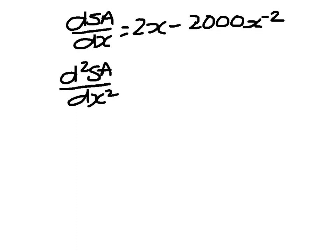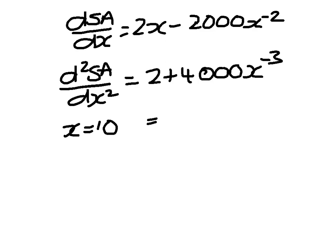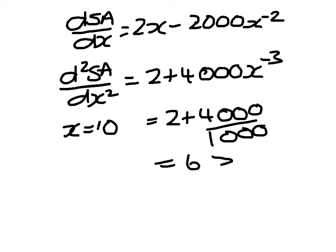On all exam papers you must then find the second differential, which gives us 2 plus 4000 x to the minus 3. And when x equals 10, that will be 2 plus 4000 over 10 cubed, which is 1000, so that's 2 plus 4, equals 6, which is greater than 0. So therefore, we do indeed have a minimum. Thank you.